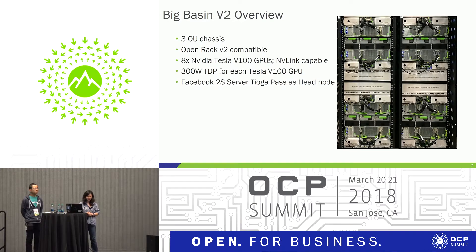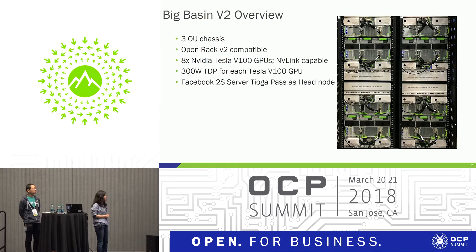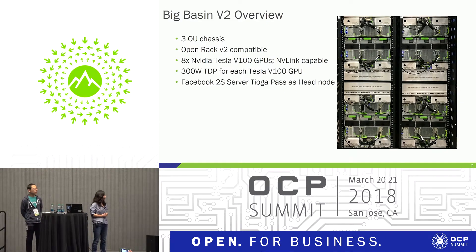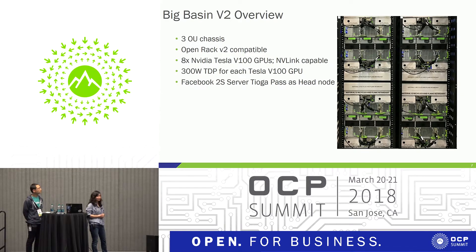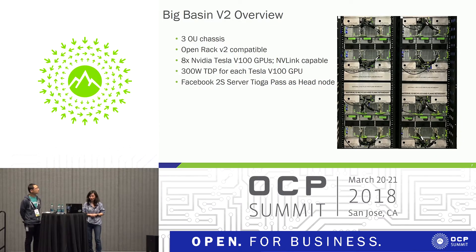This is a picture of our Big Basin system with its handle in the rack. Big Basin is a three-U chassis design and is Open Rack V2 compatible. In Big Basin, we integrate eight NVIDIA Tesla V100 — also called Volta GPU — with full NVLink mesh. The Volta generation GPU is up to 300 Watt TDP, the same as the previous generation. We upgraded our handle to our latest generation two-socket server, Tioga Pass.